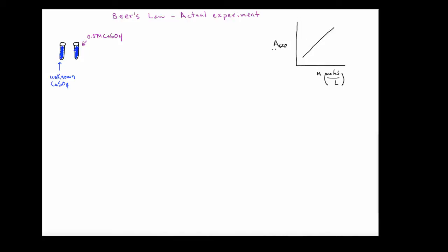We need to generate a standard curve, which means changing our 0.5 molar copper sulfate into a range of different concentrations. We take the absorbance and should get a straight line. Then we measure our unknown, which hopefully falls somewhere within that line — we literally walk over to the line and down, and we have the concentration of the unknown. That's the idea here.